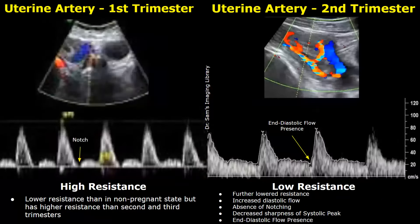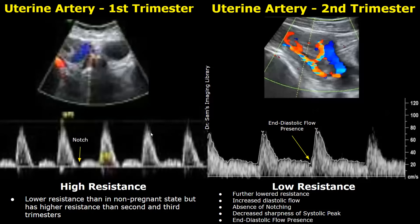This image on the left is of a uterine artery in the first trimester. The waveform shows lower resistance compared to a non-pregnant uterus — still overall high resistance, but the systolic peak is less sharp, slightly rounded, though still considered a sharp systolic peak. The diastolic notch is also present, there is a little bit of forward flow, and a small amount of end diastolic velocity.